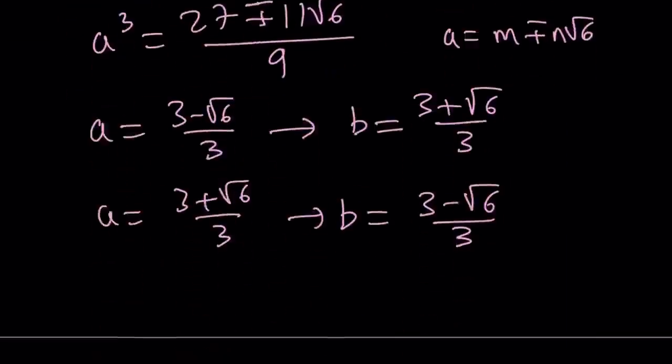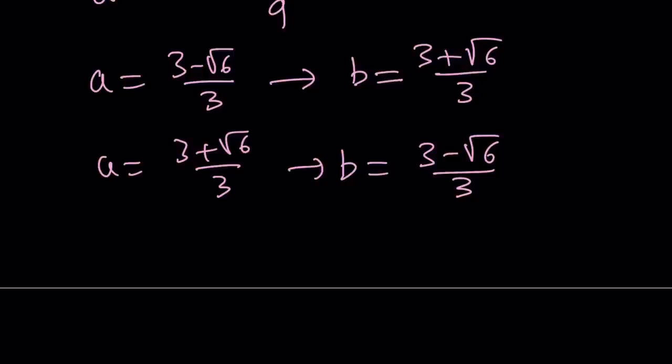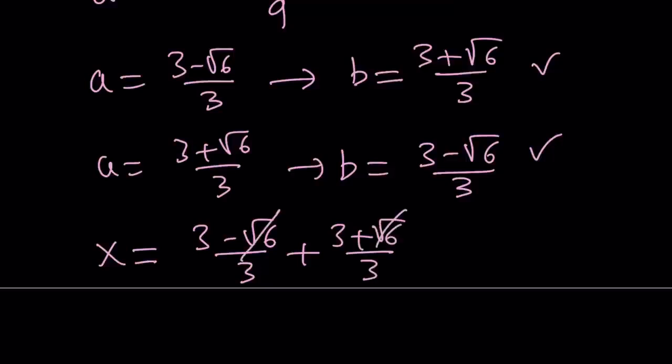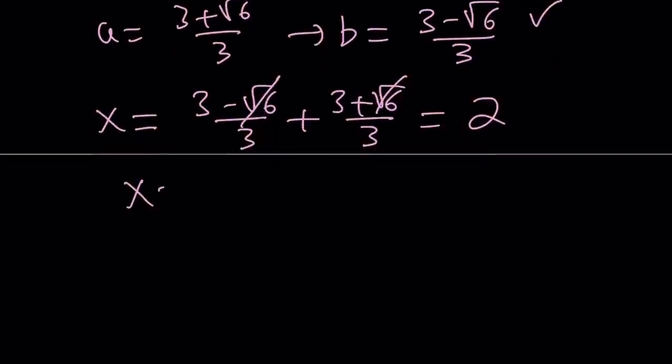Our goal is to find a and b, so, it doesn't matter which pair you pick, but x is going to give you the same answer, both of them. So, if you go with the first one, then we're going to get the following, if we add these up. Obviously, root 6 is going to cancel out, 6 divided by 3 is equal to 2. So, x becomes 2, and this brings us to the end of the first method. So, x equals 2.